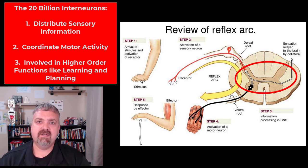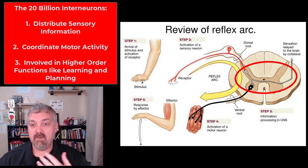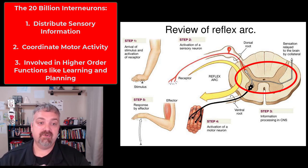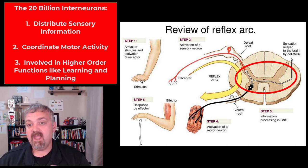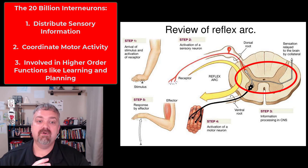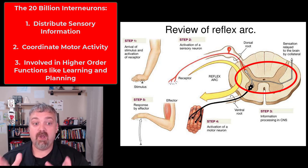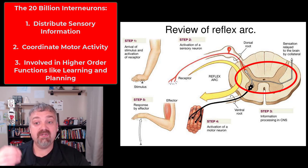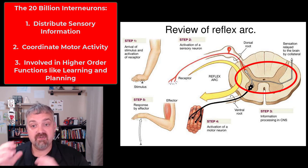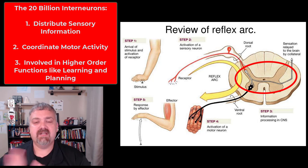We have another really important type of neuron called an interneuron — its other name is an association neuron. These can be in the brain, in the spinal cord, and even in some of your sensory and motor pathways. The key with interneurons is they distribute sensory information, coordinate motor activities, and they're also really important in higher order functions like memory and learning. There are 20 billion of those. Usually they look like a bipolar neuron, but here you can see that little white interneuron coordinating activity — receiving information from a sensory nerve and distributing motor commands. So it can actually be involved in a reflex.